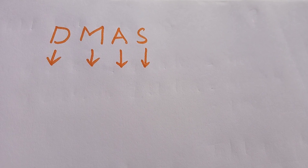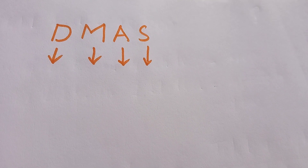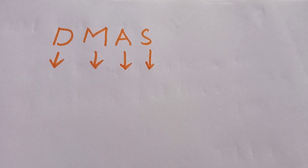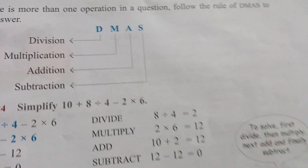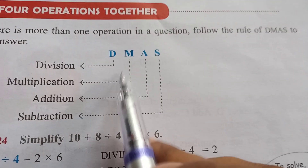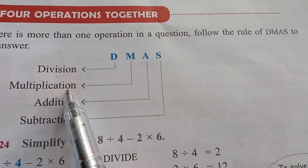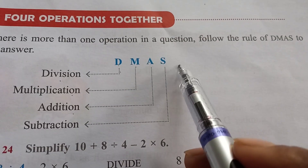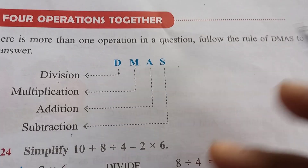Hello students. In this class we are going to learn about DMAS. The full form of DMAS is D for Division, M for Multiplication, A for Addition, and S for Subtraction.